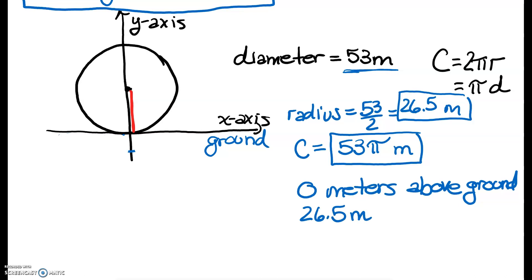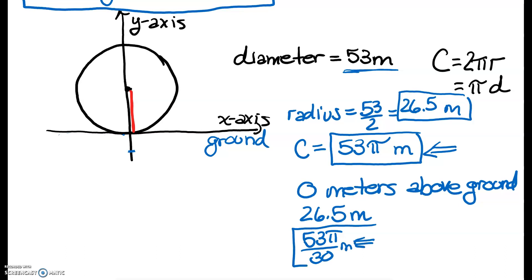For the sarsen circle, they ask how far apart each stone should be placed. Since there were originally 30 sarsen stones located on the circumference, you take the circumference and divide it by 30: 53π ÷ 30. So the centers of the stones would be spaced 53π/30 meters apart.